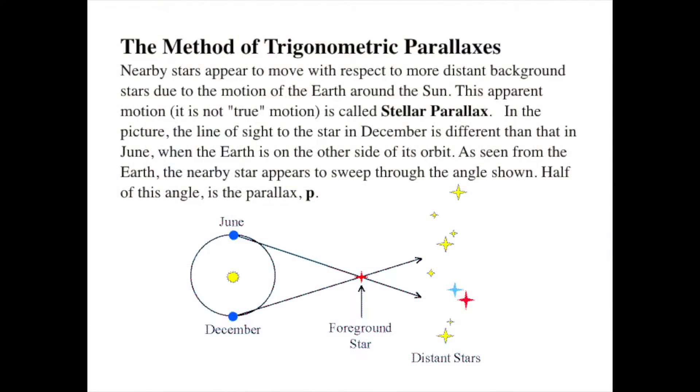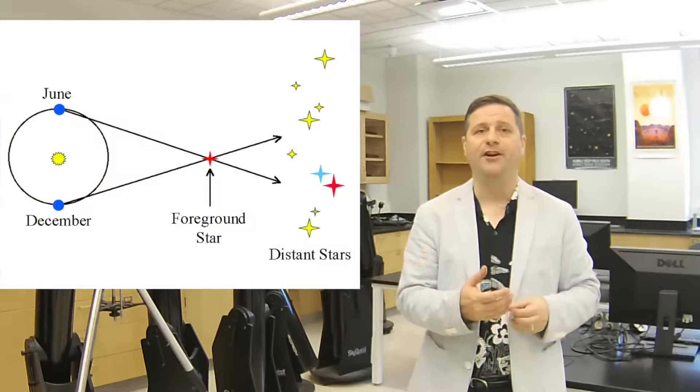Stellar parallax will be the parallax that we see with respect to background stars. Maybe there's some close foreground stars and some really far distant stars. Stars are apparently distributed in space, so that is the case. There are some nearby stars and some far stars.